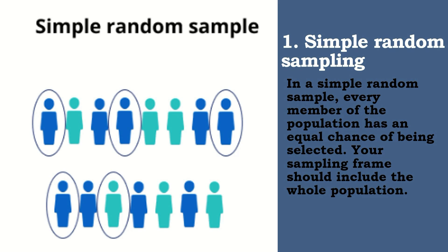Like, for example, draw lots, nakalagay doon sa box lahat ng names ng pangalan ng population, then you will select a certain number to represent your sample. For example, you want to select a simple random sample of 100 students from your school. You will assign a number to every student in your school's database from 1 to 1,000. Halimbawa, there are 1,000 in the population. And you will use a random number generator to select 100 numbers. That is an example of simple random sampling.